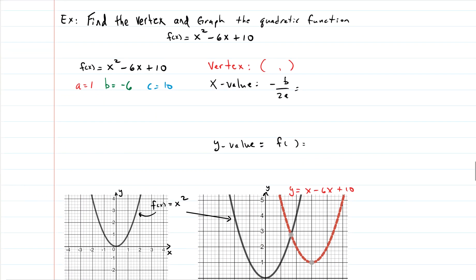So here's an example. Find the vertex and graph the quadratic equation. f of x equals x squared minus 6x plus 10. So I've already identified the a, the b, and the c for you. a is 1, b is negative 6, and c is 10.